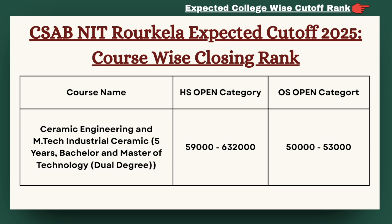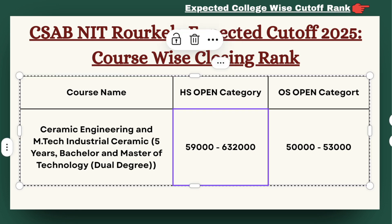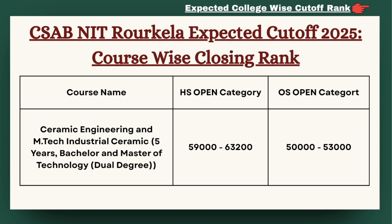Next we have Ceramic Engineering. For HS category, the cutoff can be expected between 59,000 to 63,200, and for OS category the cutoff can be expected between 50,000 to 53,000.